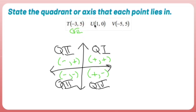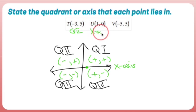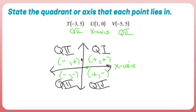And (-5, 5) — negative, positive — is quadrant 2 again. So those are your quadrants, those are your axes, and those are the points that live with them.